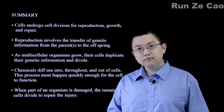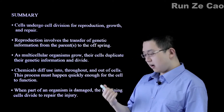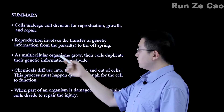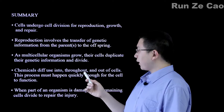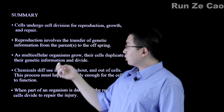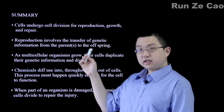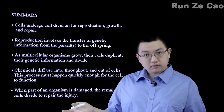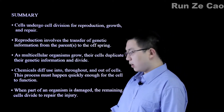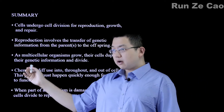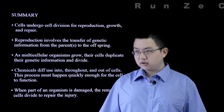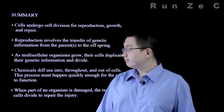And of course, cell division is also for repair — hence why injuries such as a scar on the head heal. Reproduction involves the transfer of genetic information from parent or parents to offspring. It can be sexual — two parents, at least in Earth's form of sexual reproduction — or asexual, with only one parent. As multicellular organisms grow, their cells duplicate their genetic information and divide; otherwise you'd end up with less and less information in each cell until it could no longer keep itself alive.